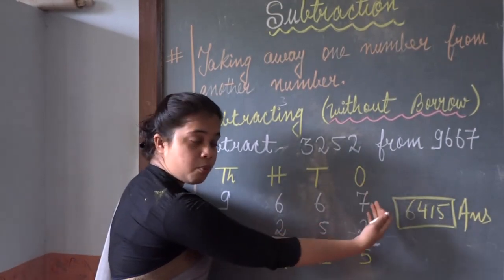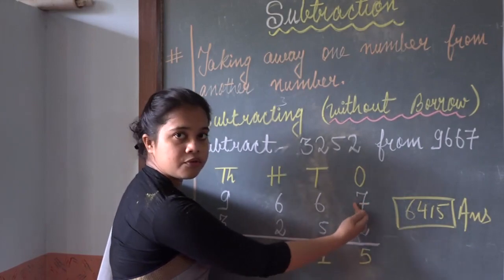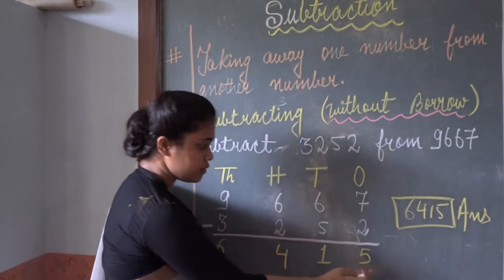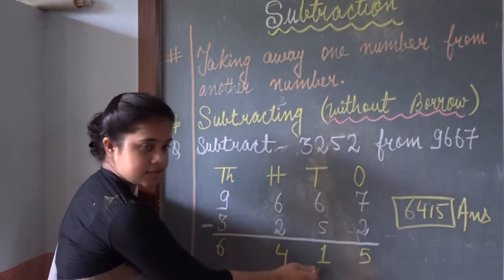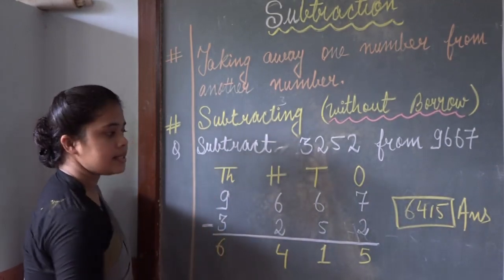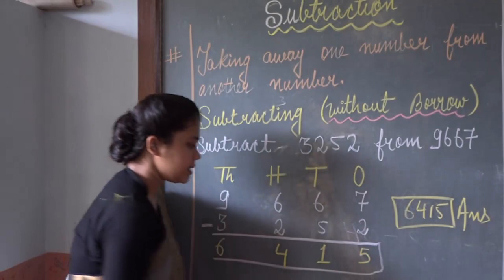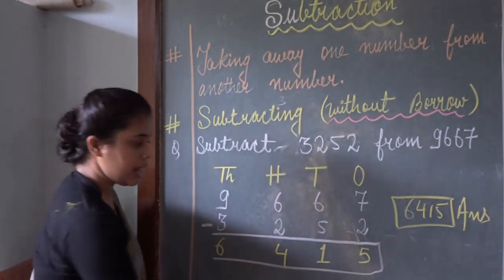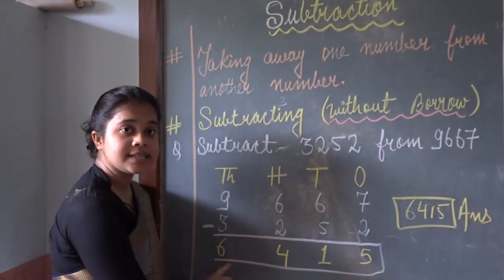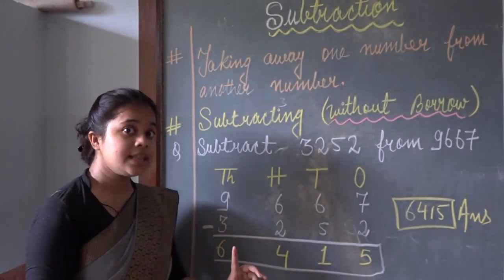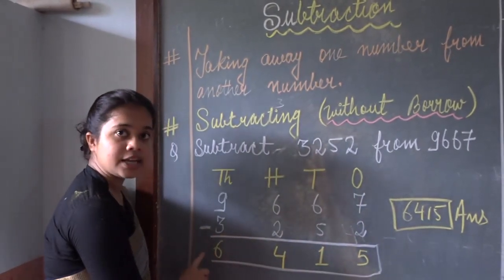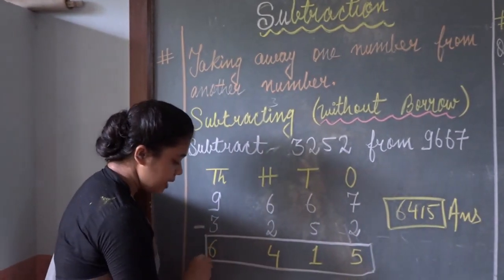Starting from the right side, we subtract 2 from 7 — the result is 5. Then 5 from 6 — result is 1. Then 2 from 6 — result is 4. Then 3 from 9 — result is 6.